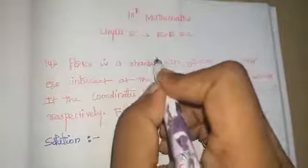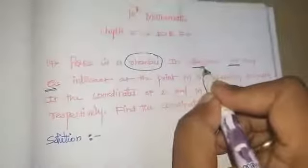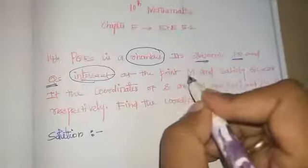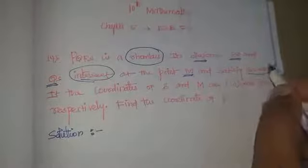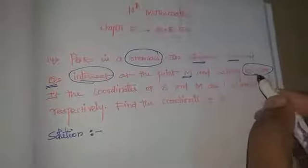So in the given problem, PQRS is a rhombus. In the rhombus, PR and QS are diagonals. The two diagonals intersect and the midpoint is M. The condition satisfied is QS equal to 2PR.